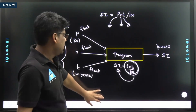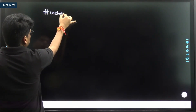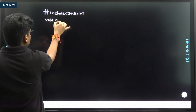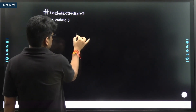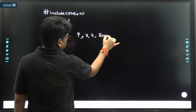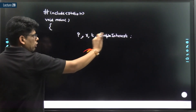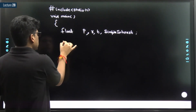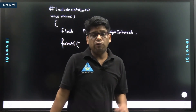Let me write the program. We start with #include <stdio.h> and the main function. First of all we need variables — let's say p, r, t, and si for simple interest. The data type for all of them is float. Next, we need to display a message to the user about what he or she is supposed to do.